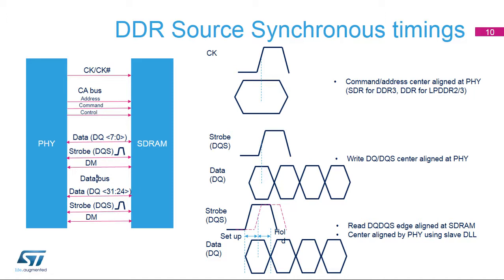The DQ-DQS group per byte lane: these signals are bidirectional according to read and write command. The data group includes data, or DQ, and data mask, or DM signals, related to the DQS-DQS# strobe. For write access, DQ and DQS are center-aligned at PHY output by the MDLLs. For read access, DQ and DQS are edge-aligned at SDRAM edge, and the PHY will gate in and out signals and realign DQS and DQS# for optimal sampling using the SDLL. Fine-step delay can be applied to individual signals in the group for optimal timing margins.